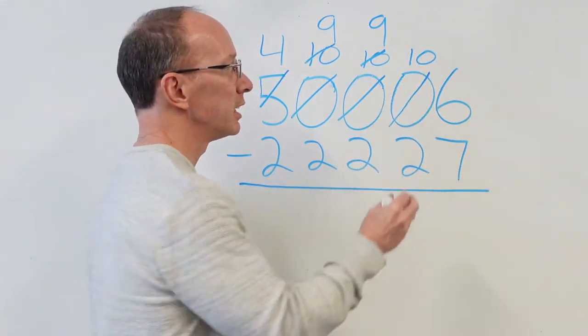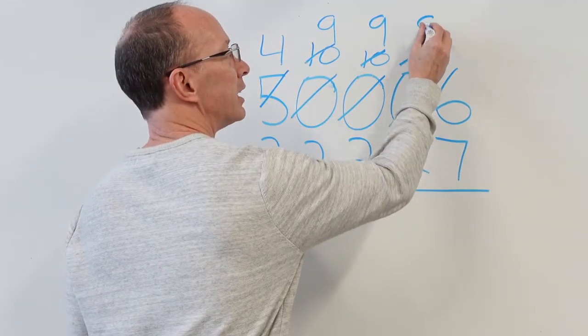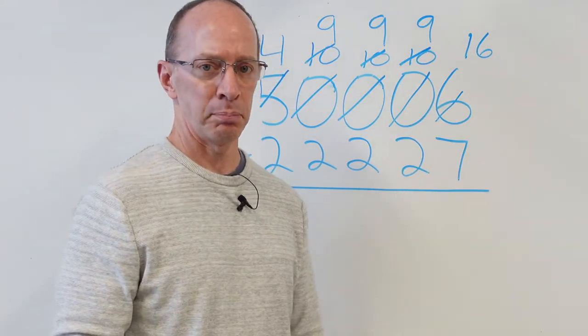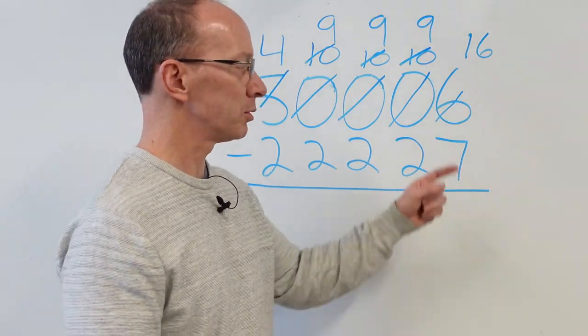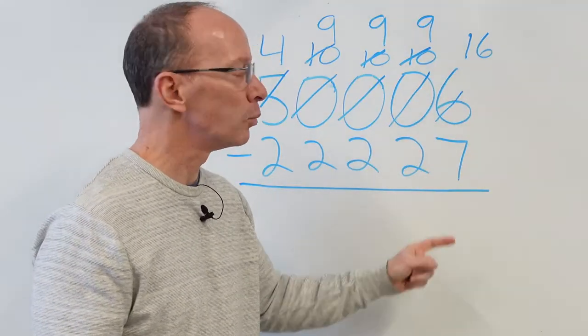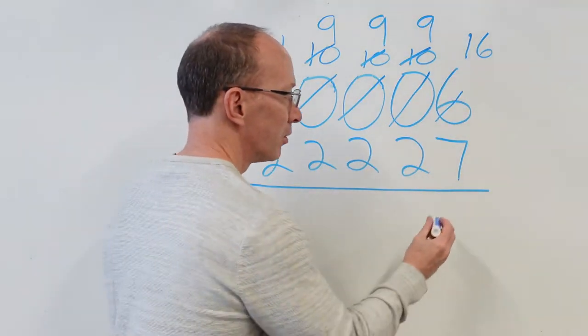Need to borrow one from the ten. That becomes a nine. Now I become sixteen. I am very powerful now. Now I am able to do subtraction. Yes, you are. Sixteen minus seven. What is it? Nine. Awesome.